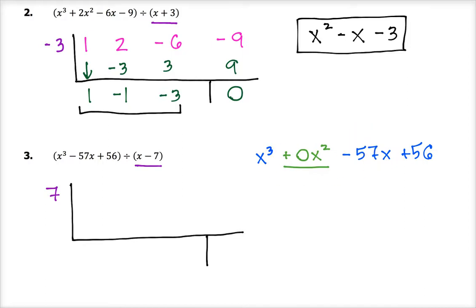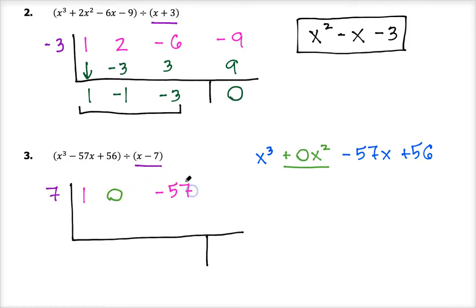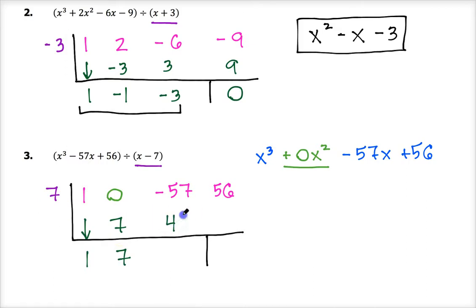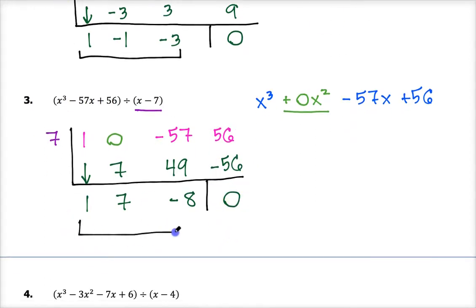Now filling out the top row: the first coefficient is 1, then a 0 to represent that missing x squared term — you have to have placeholders in synthetic division — then minus 57, and finally 56. Bring down the 1. 1 times 7 is 7, that goes below the 0. 0 plus 7 is 7. 7 times 7 is 49. Negative 57 plus 49 is negative 8. 7 times negative 8 is negative 56. 56 minus 56 is 0. So again three terms in the final answer with no remainder: x squared plus 7x minus 8.